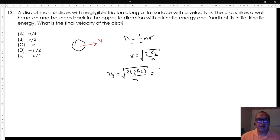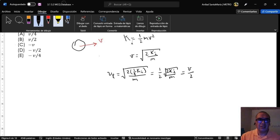Or one-half of the initial speed. Since the disk bounces in the opposite direction, the final velocity is negative V over two. That is option D.